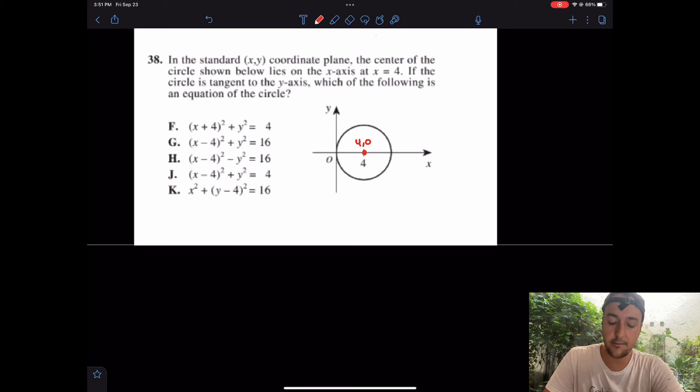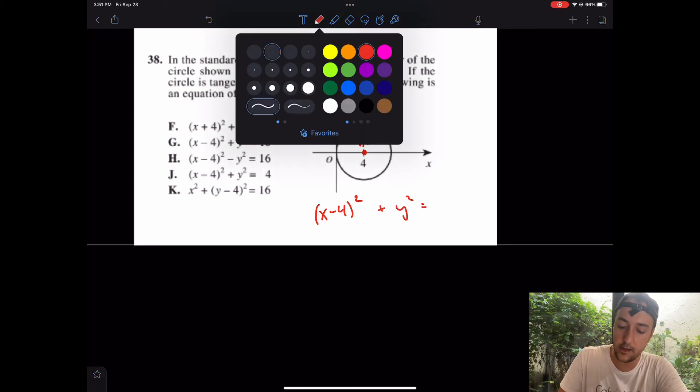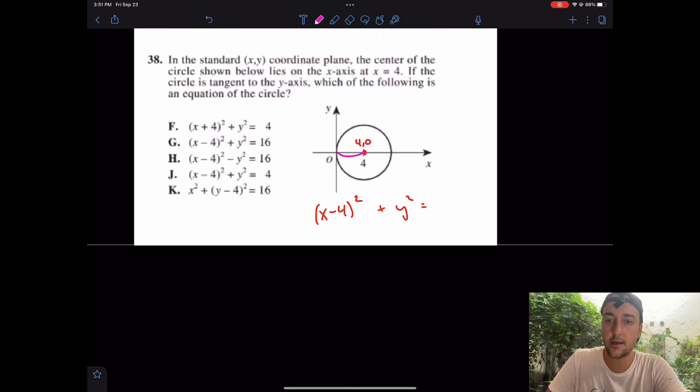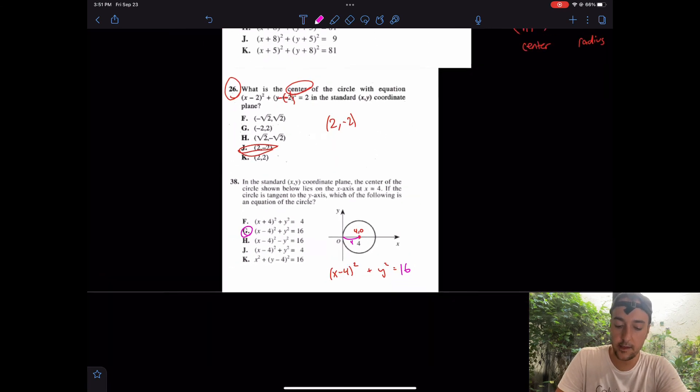Taking a look at this, which answer choice do we like? I would argue that the center is (4,0). So I have (x-4)² + y² equals... wait a second, what about the radius? I understand that the radius is a distance of 4 here. Again, that's a distance of 4. Thus, what do we have? It must be 4 squared coming out to 16. I really like G.